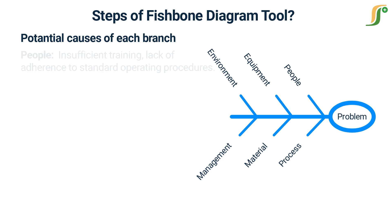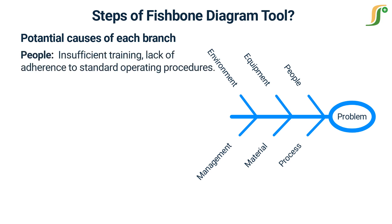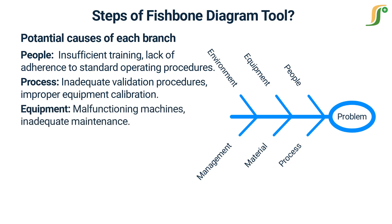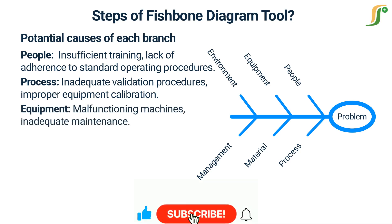Examples of potential causes for each branch: the people branch may have potential causes such as insufficient training and lack of adherence to standard operating procedures. The process branch may include inadequate validation procedures and improper equipment calibration. The equipment branch may include malfunctioning machines and inadequate maintenance.